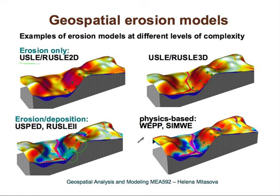More sophisticated models can predict the shifting of the erosion and deposition boundary. In simpler models, that boundary falls essentially at the inflection point of the topography. More sophisticated models can predict shifting of this boundary based on conditions that influence sediment transport capacity — for example, based on type of flow, type of soil, or land cover.